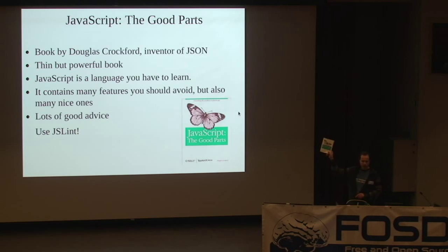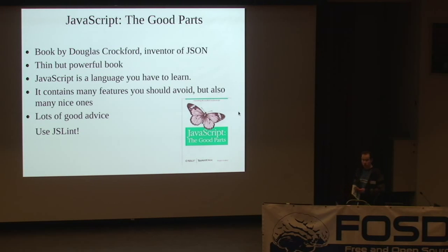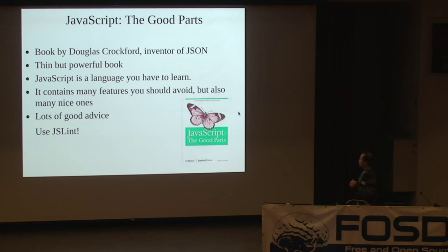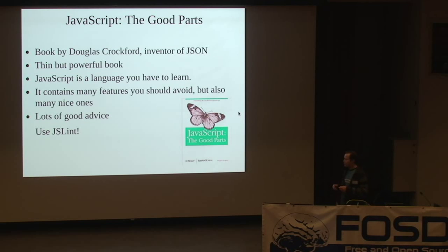I saw the O'Reilly stand here — they're the biggest sponsor of the event. So I think it's good to say this is an excellent book and you should probably buy it if you want to write JavaScript. It's called 'JavaScript: The Good Parts' and it explains which parts of JavaScript are bad and which you should avoid. It's a very thin book and a great read. The author of the book also wrote a program called JSLint, which will tell you if you're using a bad part of JavaScript so you can avoid it.